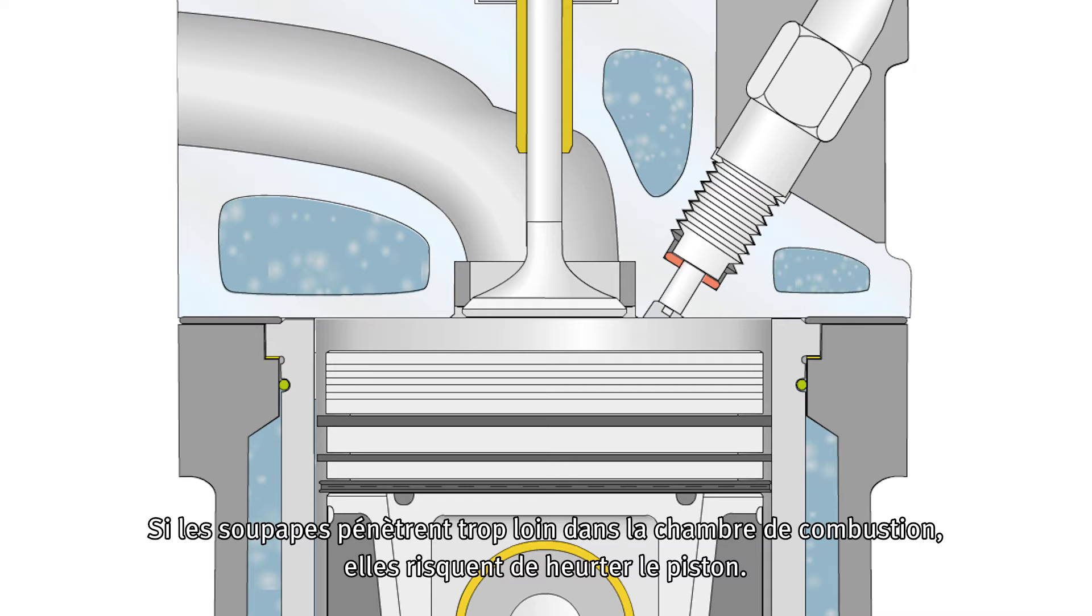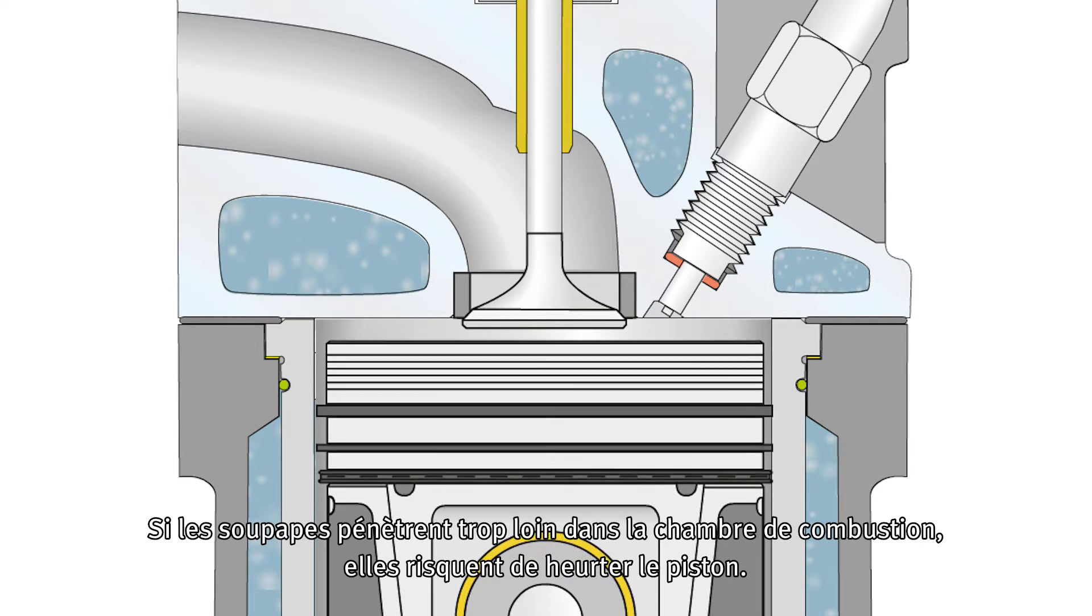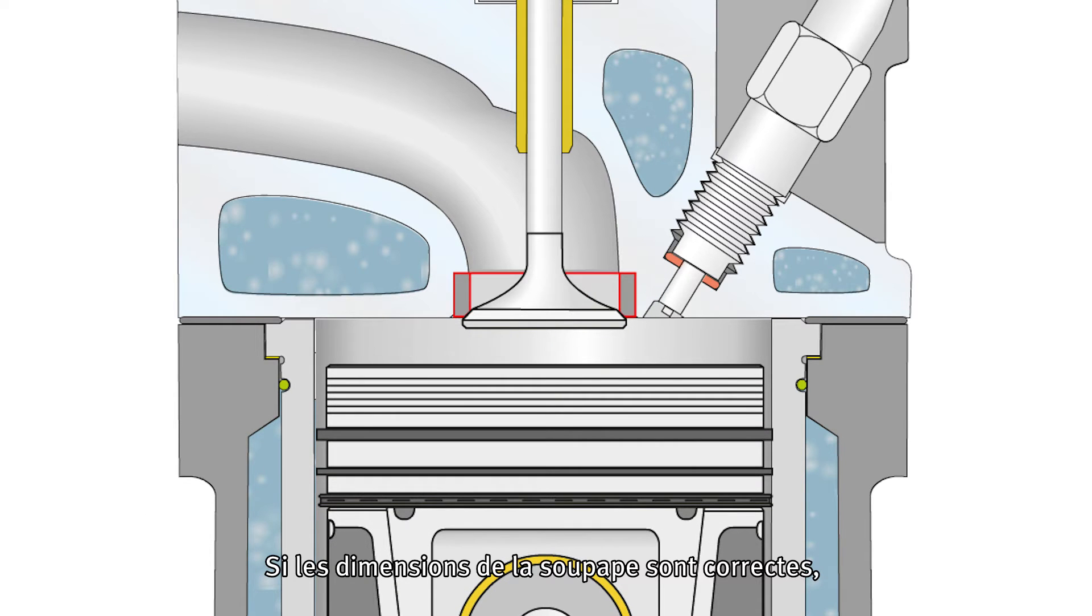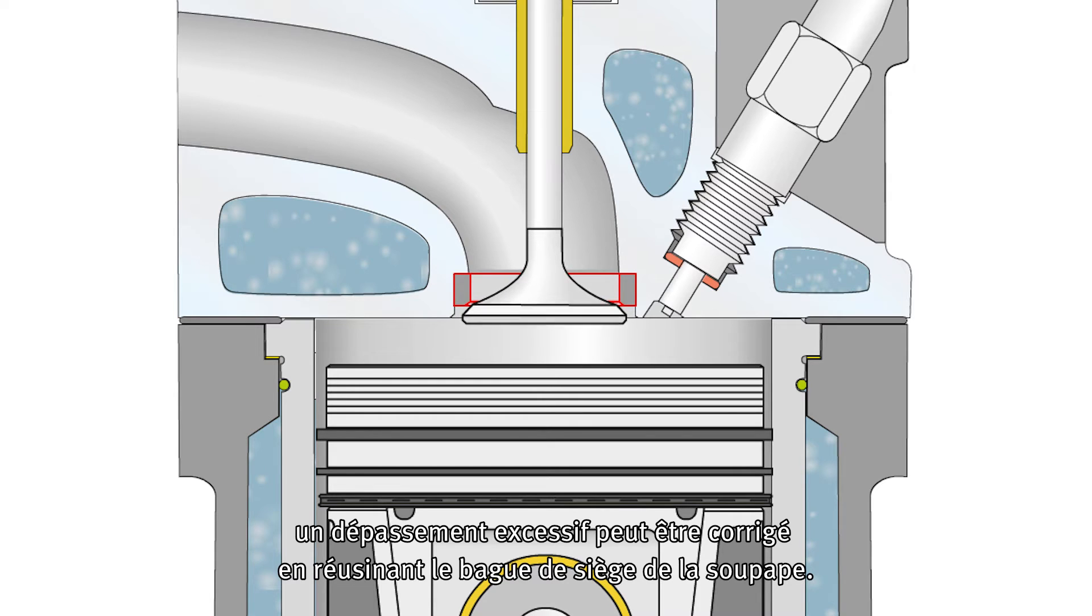If valves protrude too far into the combustion chamber, these can collide with the piston during operation. If the valve dimensions are okay, a valve protrusion that is too big can be corrected by reworking the valve seat insert.